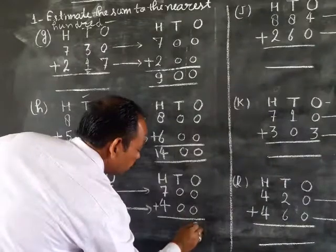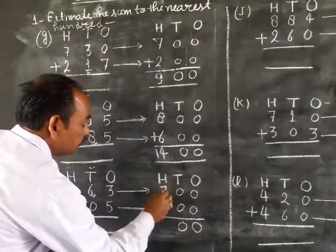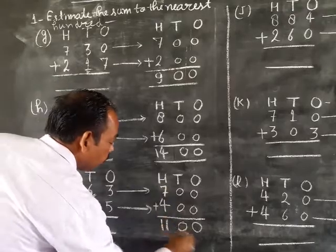0 plus 0 is 0, 0 plus 0 is 0, 7 plus 4 is 11. This is the answer.